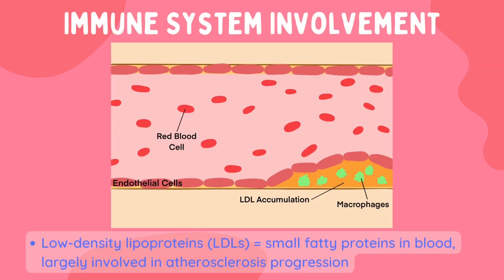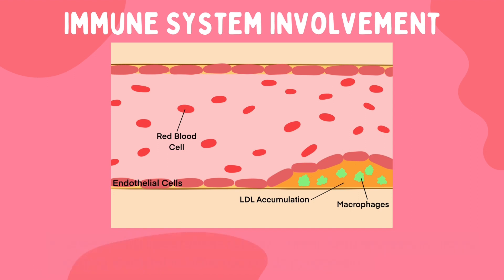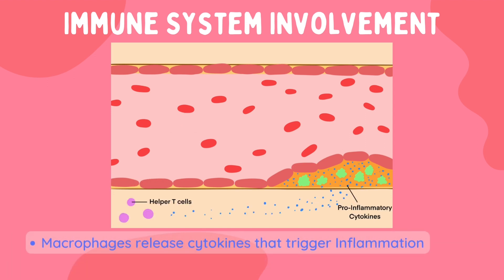Let's once again look at what's happening in the blood vessel. Low-density lipoproteins, or LDLs, are small fatty proteins that circulate in the blood. When they accumulate under the endothelial layer, they become oxidized. This starts the immune response by binding to specialized receptors on macrophages, and these cells then remove the LDLs by phagocytosis. In atherosclerosis, LDL accumulation is often too much for the macrophages to handle, so as a cry for help, they release cytokines which cause inflammation to occur.